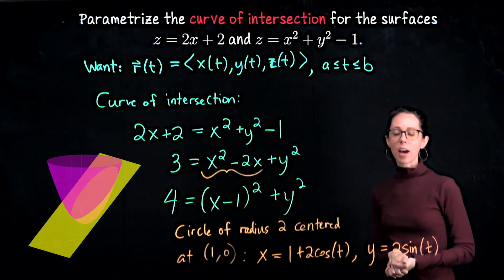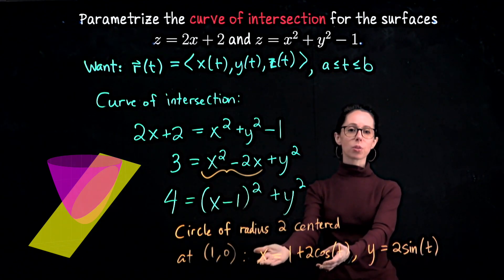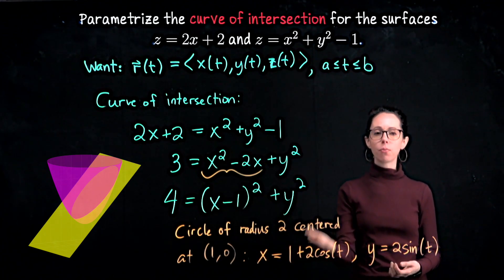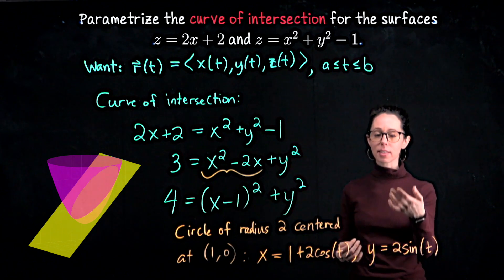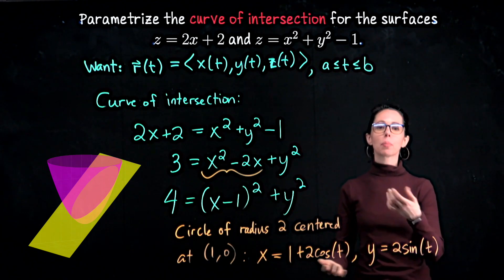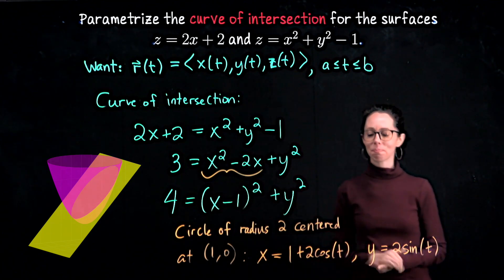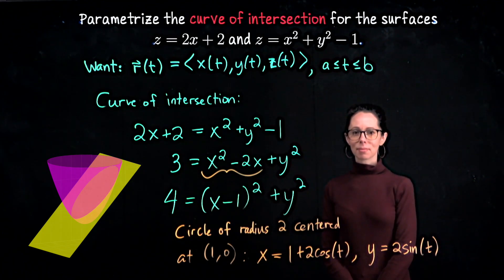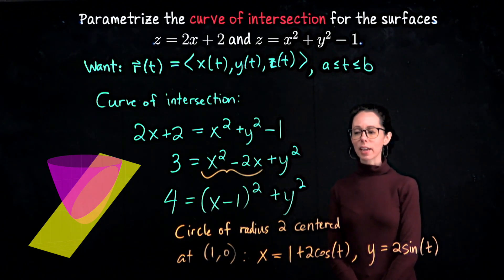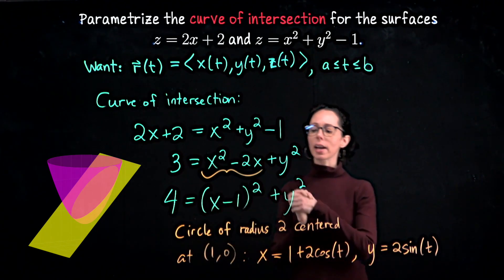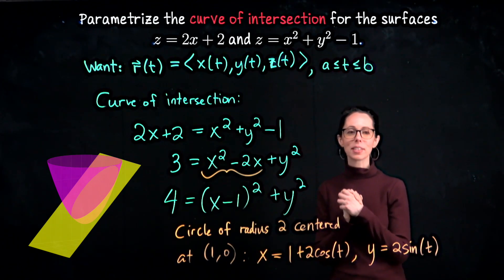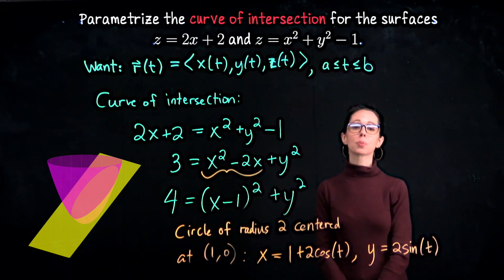What happens now if I do x minus 1? x minus 1 is just 2 cosine t. Square that, you get 4 cosine squared plus this quantity, which is 4, squared is 4 sine squared. 4 cosine squared plus 4 sine squared is 4. We have now established that for any point on this curve of intersection, its x and y coordinates satisfy the equation 4 equals x minus 1 squared plus y squared. In other words, they live on a circle of radius 2 centered at 1, 0. So they should be described using this polar description.